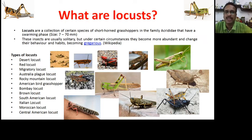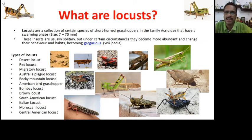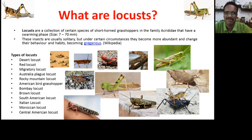Under certain circumstances, such as a prolonged dry period followed by heavy rains that make the earth green and food abundant, locusts start socializing, become gregarious — meaning they love to be in groups — start moving together and breeding, resulting in a large number of insects we call locusts.